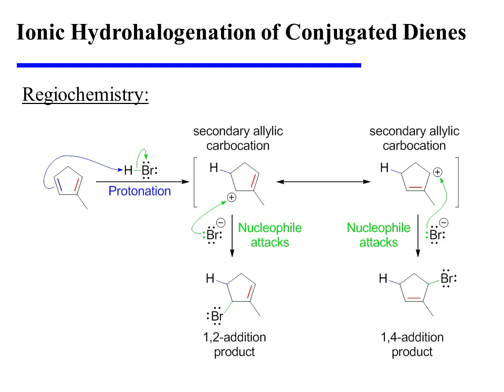In the second step of the reaction, bromide can attack either center bearing partial positive charge. However, the 1,2 and the 1,4 addition products in this case happen to be the same compound.